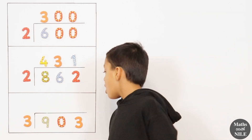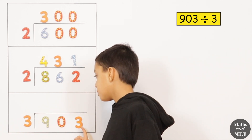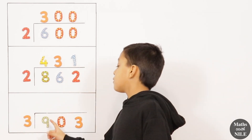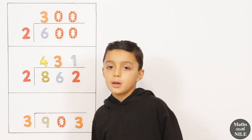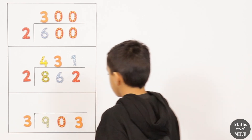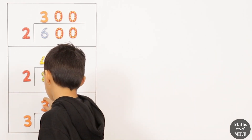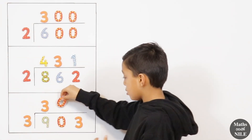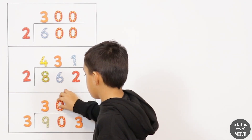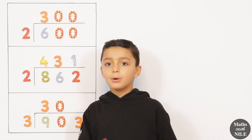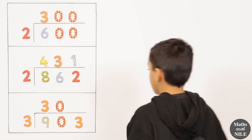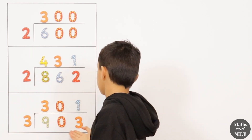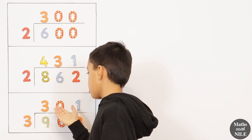Next question: 903 divided by 3. So 3 goes into 9, 3 times, so we put 3 on top. Then 3 goes into 0, 0 times, so we put a 0 there. Then 3 goes into 3 once, so we put our 1 there. The answer is 903 divided by 3 equals 301.